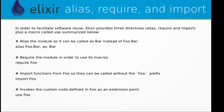To alias a module so it can be called as Bar instead of Foo.Bar, you can use: alias Foo.Bar, as: :Bar. For requiring a module in order to use its macros, you use the require keyword: require Foo. For importing functions from Foo so they can be called without the full prefix, you can use: import Foo.